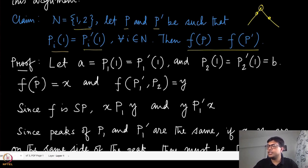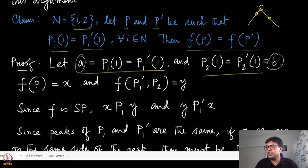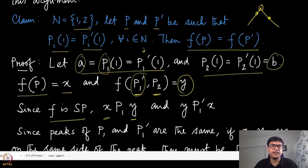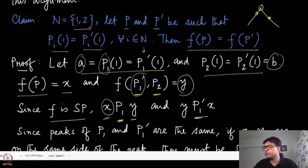How can we prove that? Assume player one's peak in both profiles is A and player two's peak is B. Suppose the outcome under the first profile P is X, and the outcome when we change player one's preference to P1-prime while keeping player two's preference the same is Y. We assume for contradiction that Y is not equal to X. Since F is strategy-proof, under preference P1, X should be more preferred than Y — P1 is the true preference and P1-prime is the misreported one. Similarly, under P1-prime, Y will be more preferred than X.